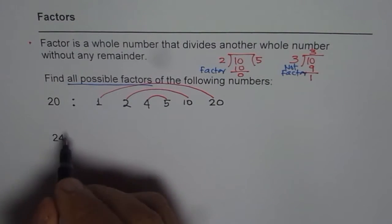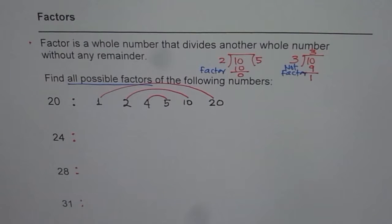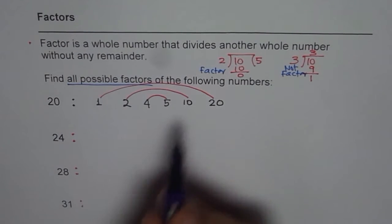Now as an exercise, I would like you to pause the video and write down all the factors of the numbers given here. We have 24, and then we have 28 and 31. So let's continue, we'll follow this method.